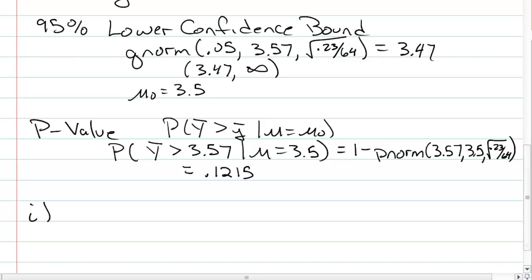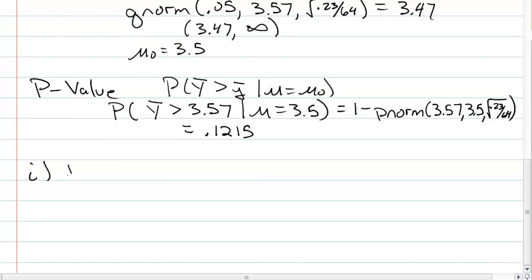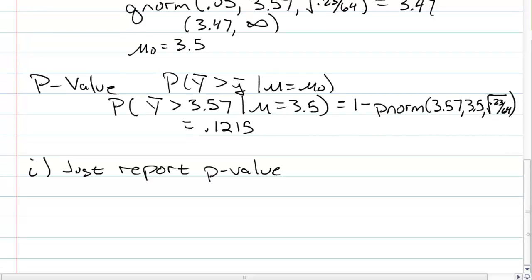Two ways to interpret this. You can just report the p-value and let the decision-maker decide what they want to do with it. They can come up with their own alpha to decide. So just report the p-value and let decision-maker decide what to do.